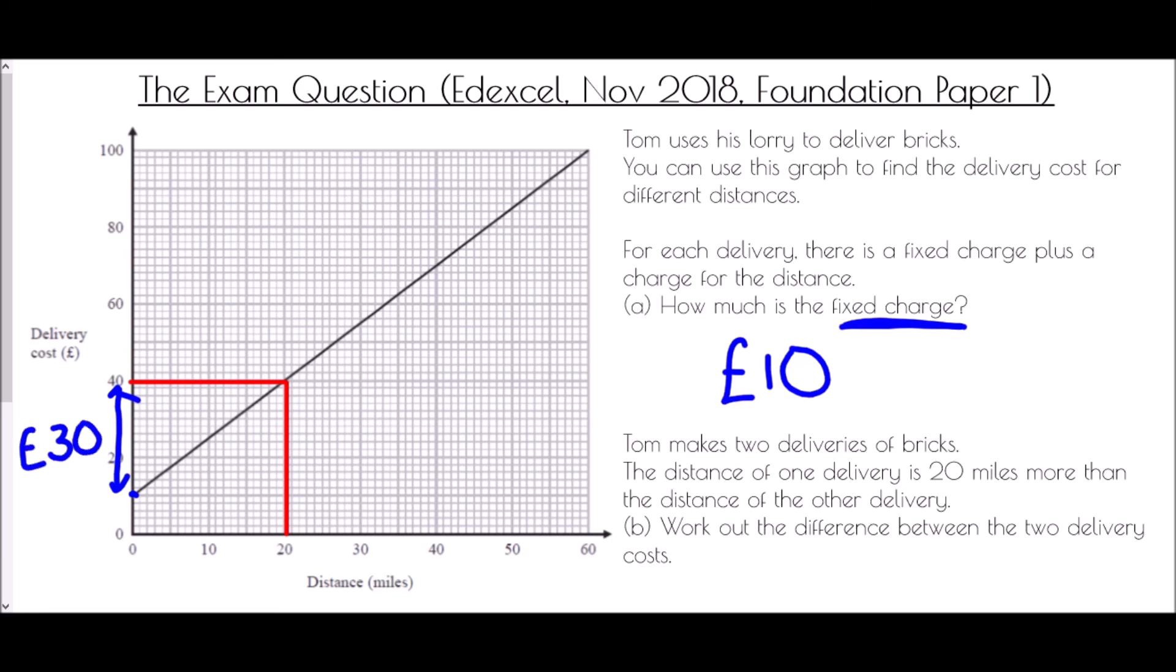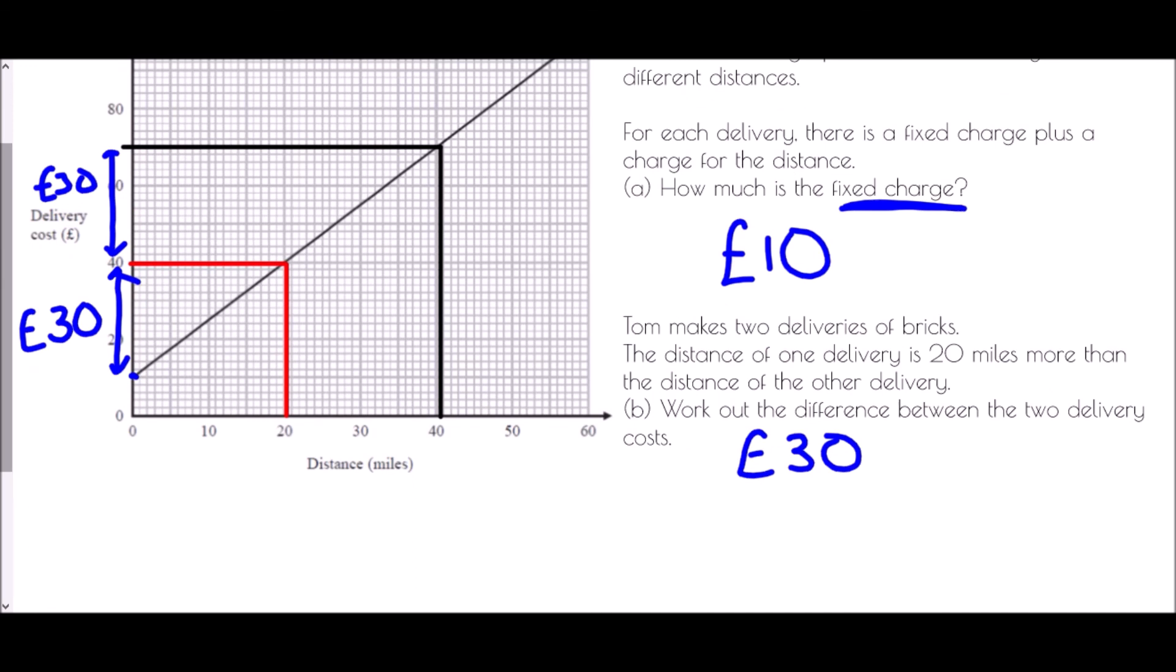If you're not sure that's correct, you could do the same process again, this time going from 20 to 40. Drawing the line straight up comes out at £70 for a 40-mile journey. From 40 to 70, that's 30 pounds again. It's worked for each of them - it's a straight line, so it should work for all of them. The difference between the two deliveries is £30. In the exam question, you would be expected to see those lines drawn onto the graph, and you should show your working: 40 - 10 = 30, or using the other lines, 70 - 40 = 30 pounds.